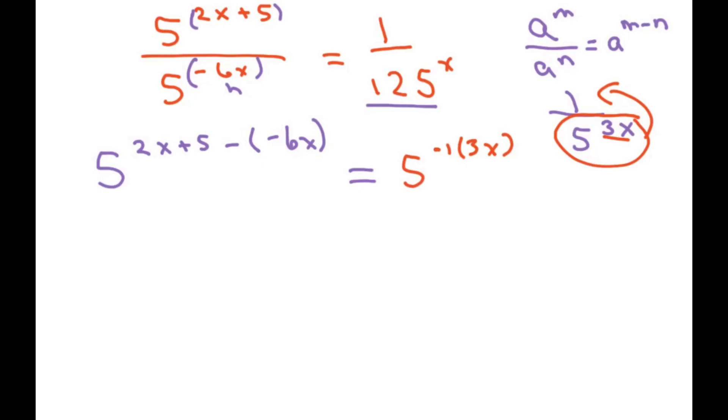Okay, so now that I have my bases the same, I'm just going to simplify everything. This is 2x plus 5. This is like negative 1 times negative 6x is positive 6x equals negative 1 times 3x is negative 3x. So we get 8x plus 5 equals negative 3x.